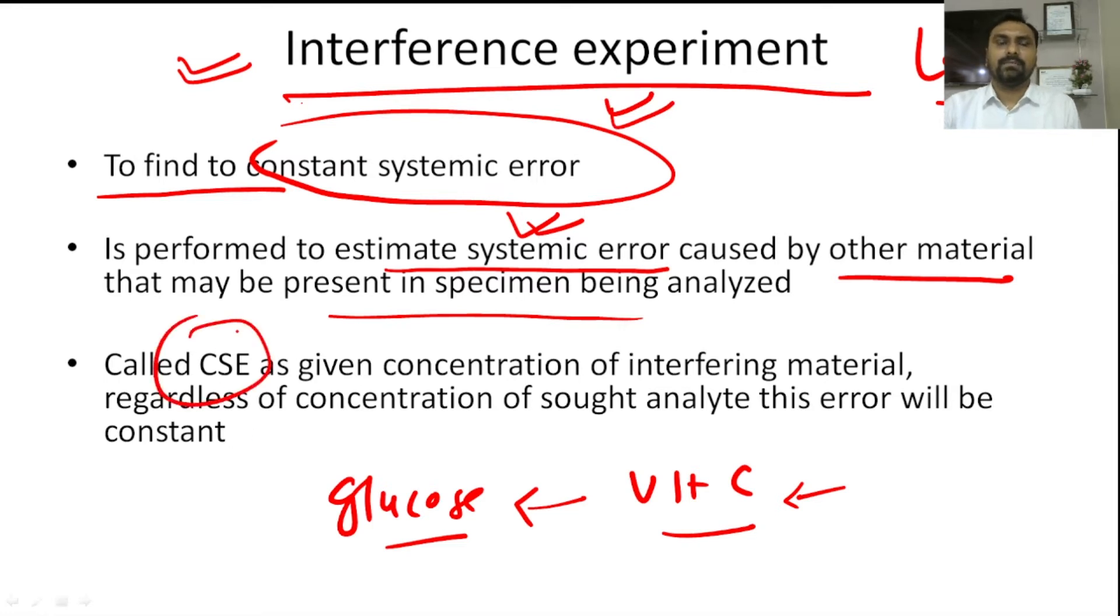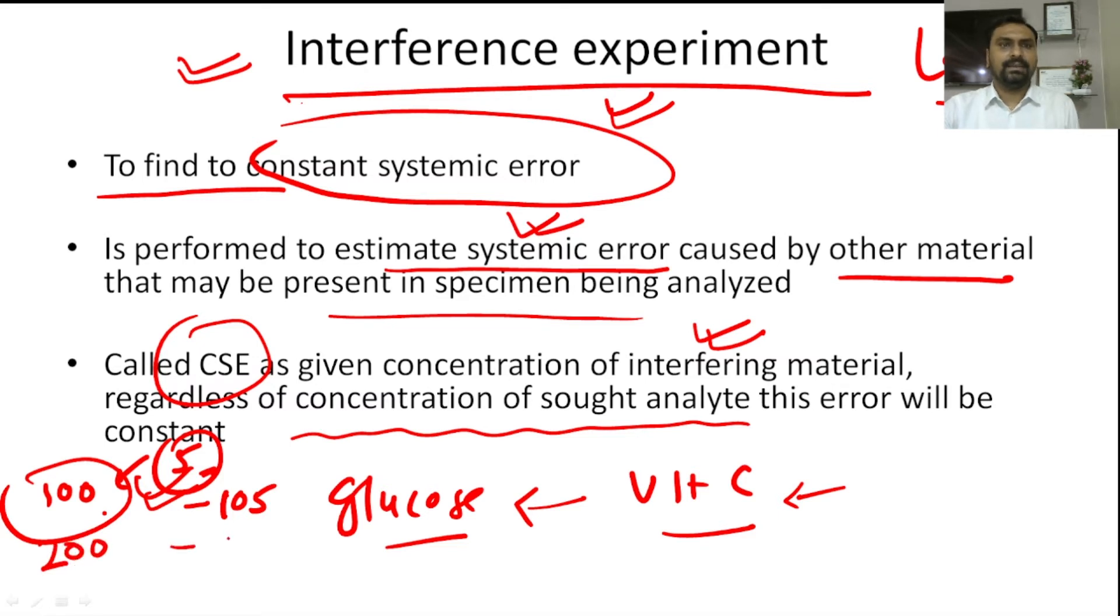It is called constant systemic error because given the concentration of interfering material, regardless of concentration of sought analyte, this error will be constant. Suppose the glucose concentration is 100 and error caused by the interfering material is 5. So if the actual result is 100, due to this systemic error we get the 105 result. If our concentration is increased, still because of the concentration of interfering material is same, the result will be 205. If we increase the concentration, still we get the same error. That is the constant systemic error.